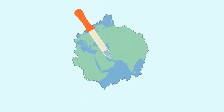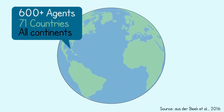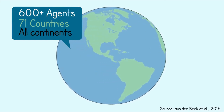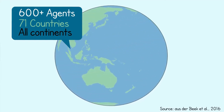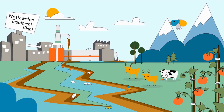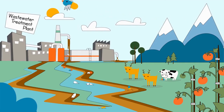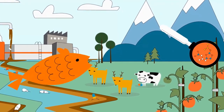Over 600 pharmaceuticals or their transformation products have been detected in 71 countries on all continents. Pharmaceutical residues entering water systems can spread to surface waters, agricultural land, and accumulate in vegetables and fish.